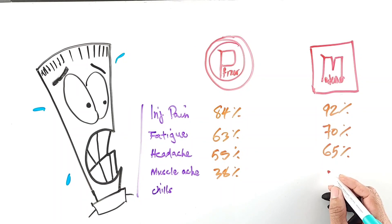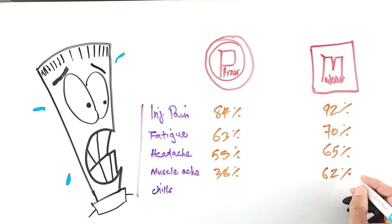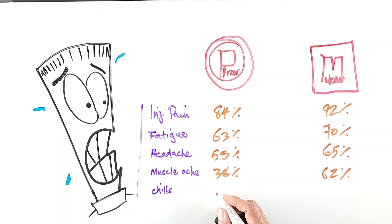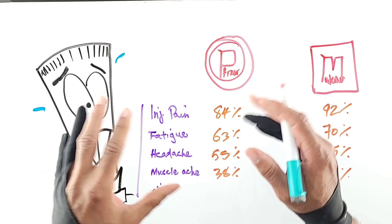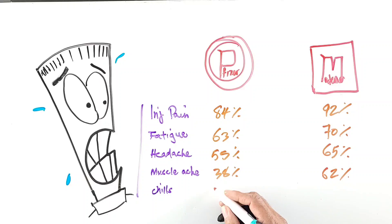Moderna the muscle aches or myalgias were about 62 percent. For chills, and we're not talking about chilling, we're talking about shaking and feeling cold as though you had the common cold.